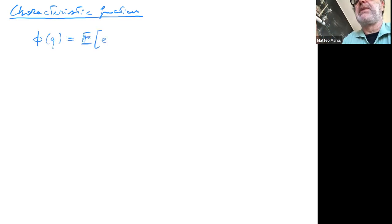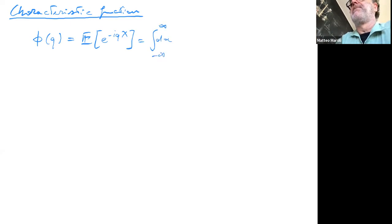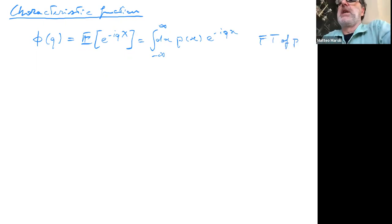The characteristic function of a random variable is defined as the expected value of e to the minus i q times x. Written in full, this is the integral of p of x times e to the minus i q x — it is just the Fourier transform of the distribution.